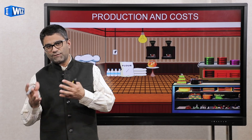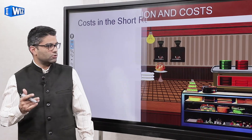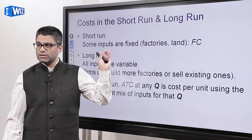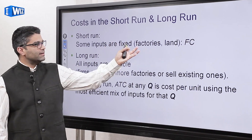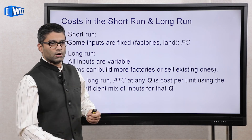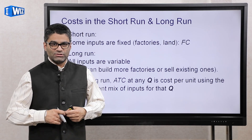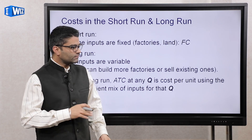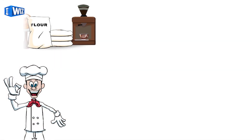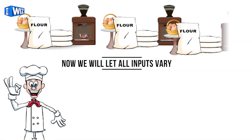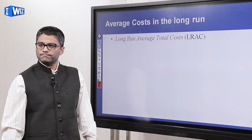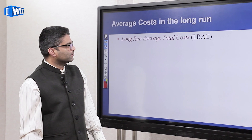Now we're going to assume that we can adjust everything — that's the difference between short and long run. In the short run there are certain inputs that are fixed; you cannot increase the size of your factory overnight. A bakery might go from short run to long run in about a month, but big factories take much longer. In this video we assume all inputs are variable, so there are no inputs constraining you like there were in the short run.